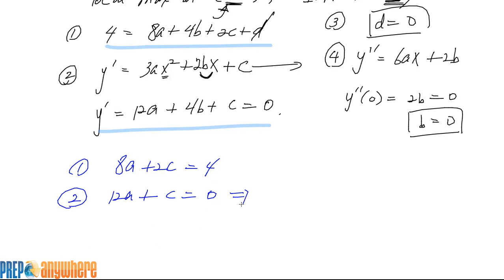So from here you can isolate c. C is minus 12a, let me call that 2 prime. Insert that into equation 1, we get 8a plus 2 times minus 12a.